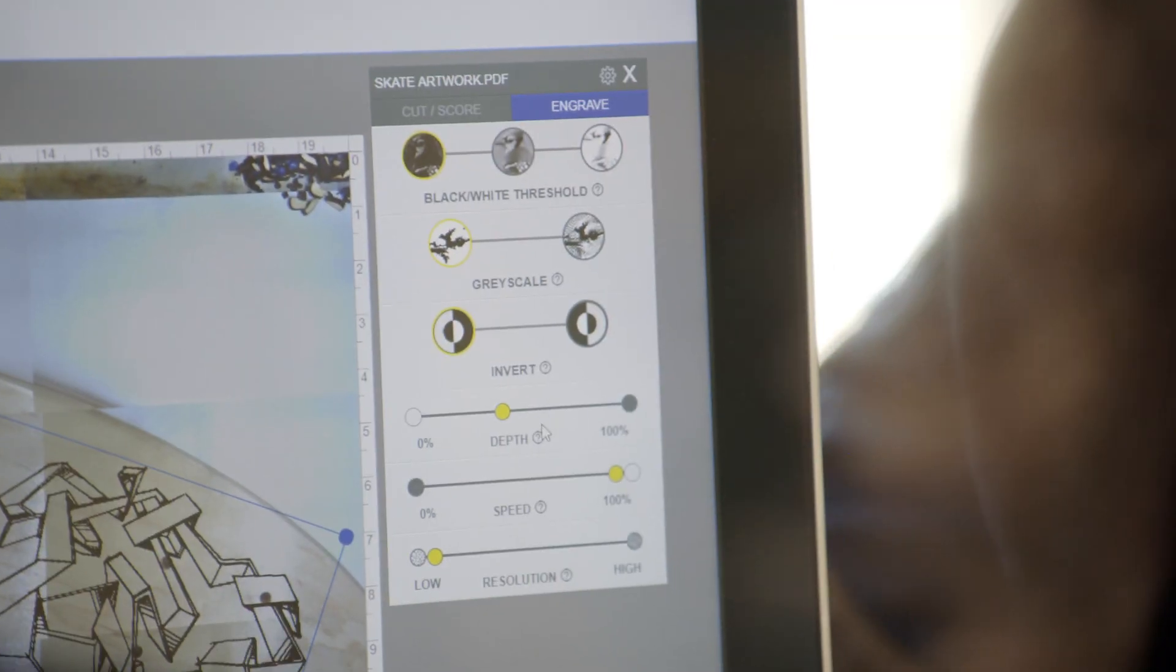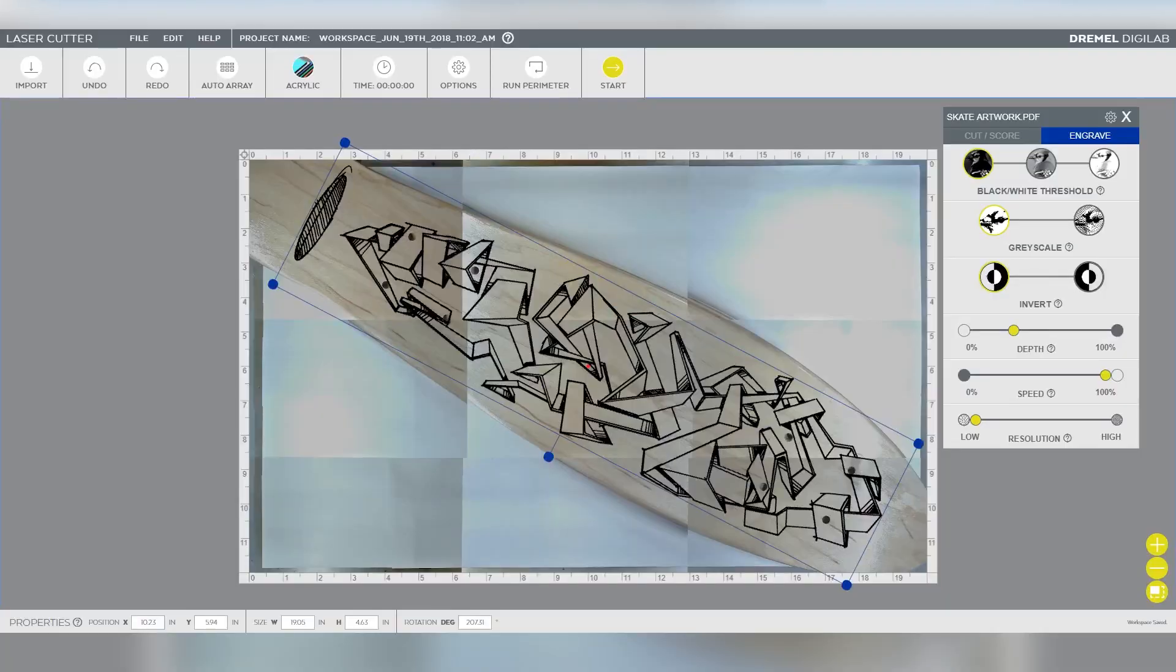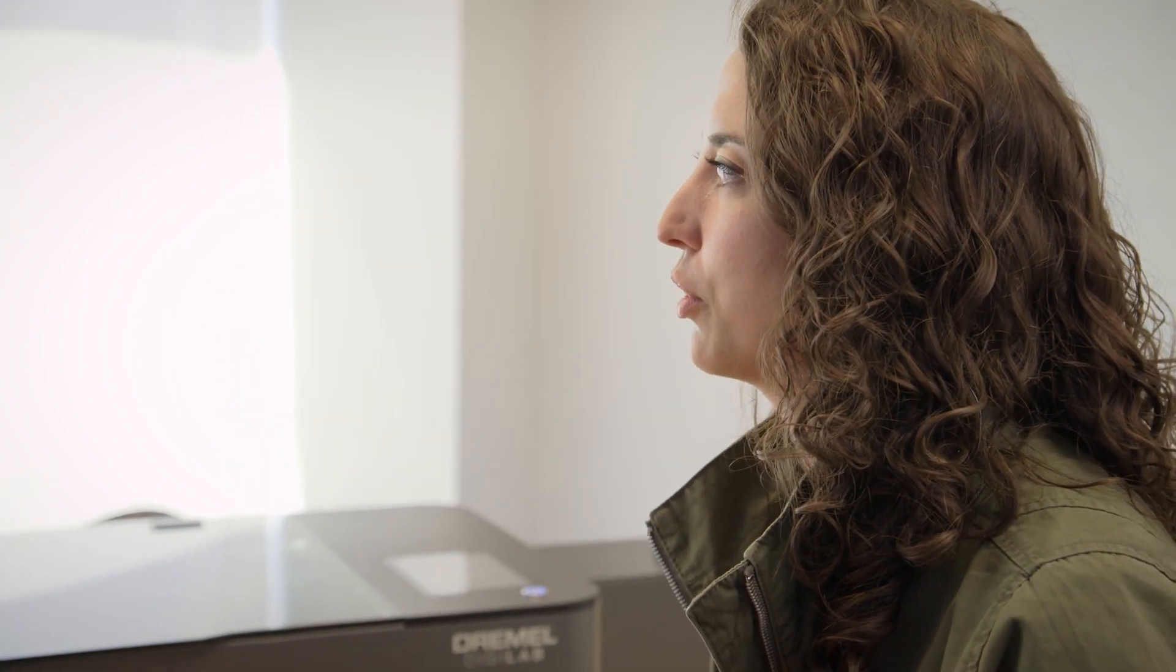We've done a little work on simplifying these settings too. The most important one for engraving is depth. This is essentially going to tell your laser how powerful you want it to be. As you turn it up, your engraving is going to get both darker and deeper typically.